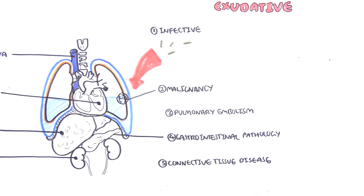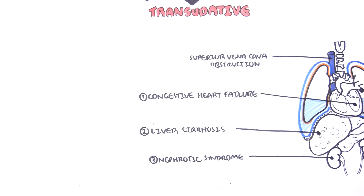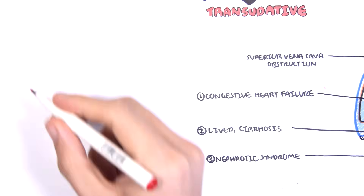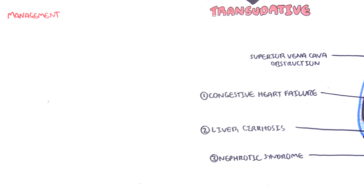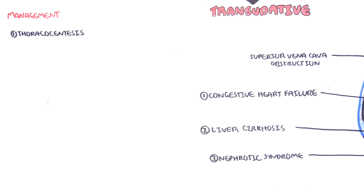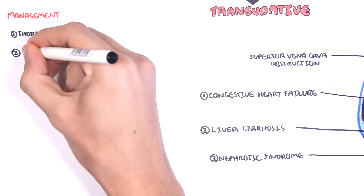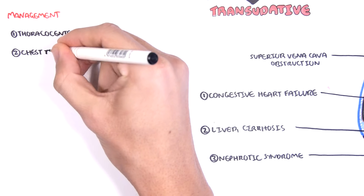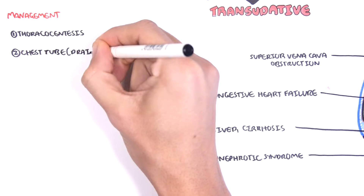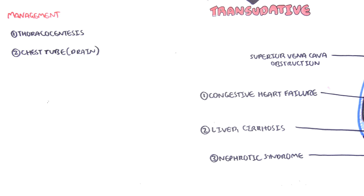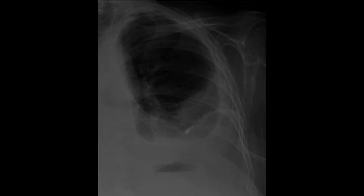The management of pleural effusions briefly: you can treat the underlying cause. Thoracocentesis is helpful to identify the potential cause but also can be therapeutic. If the effusion is large enough, the definitive treatment is a chest drain where a tube is inserted into the pleural space to drain the fluid out. On this x-ray, on the left-hand side, you have a pleural effusion and a tube inserted in a safe triangle, which will drain the fluid out.